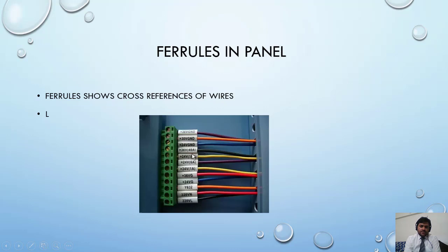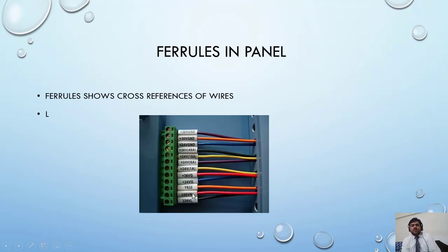Here you can see wires coming from an external source and these are connected to this terminal block. The small white color printed tubes are called ferules. In the panel you will see the terminal block, and these ferules are showing only one side of information — for example, showing the cross, the other end information.